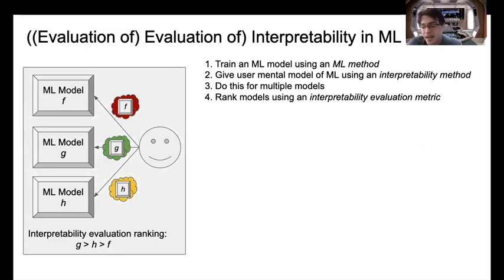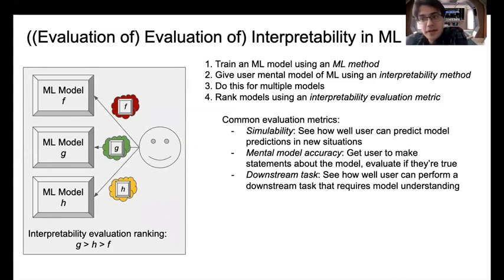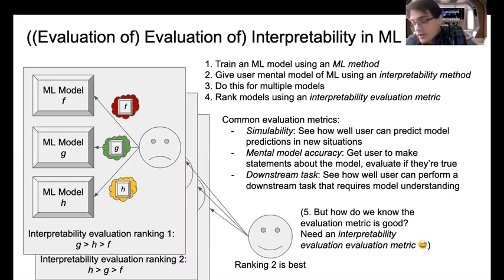To do that, we employ some interpretability evaluation metric. It gives us a quantitative score for each model, or perhaps a ranking. There are a number of ways people try to do this in practice. Some involve seeing how well the user can predict the predictions of the model. Others involve evaluating the coherency of the user's mental model, or asking them to perform a downstream task that requires some meaningful form of model understanding.